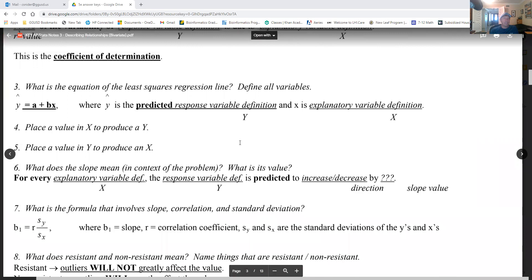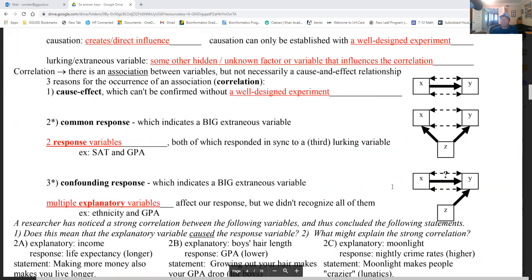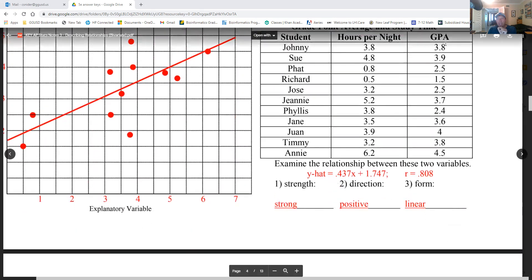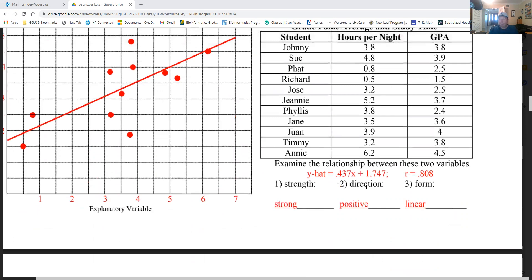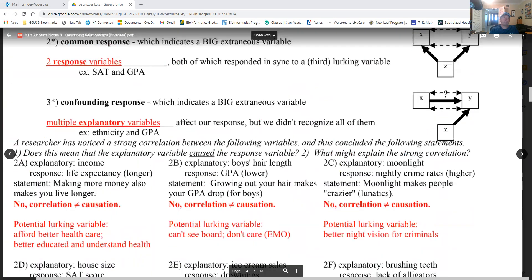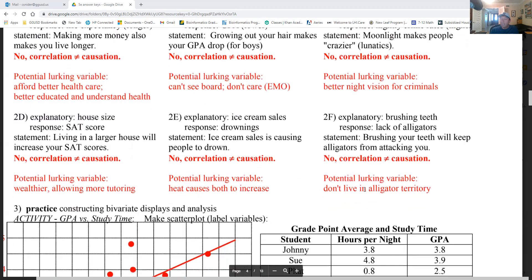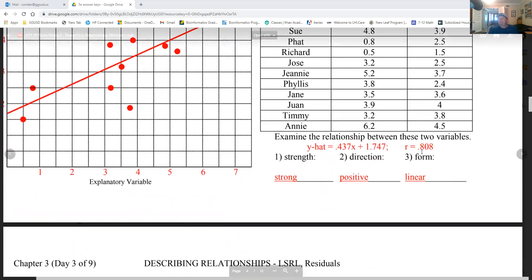Next one: number three. What is the equation that defines the line? No problem, I have it right here. It's y hat equals 0.437x plus 1.747. You'd have to say y hat equals predicted GPA, and x is hours of study per night. You want that written down too. Number four: place a value in x and produce a y. That's easy. I won't even really do it, but if they ask you something like, John studies four hours a night, what's his predicted GPA? You're going to put a four in for x. Then for number five, if they say Jimmy wants a GPA of 3.8, how many hours should he study? Put 3.8 in for y hat and go backwards.